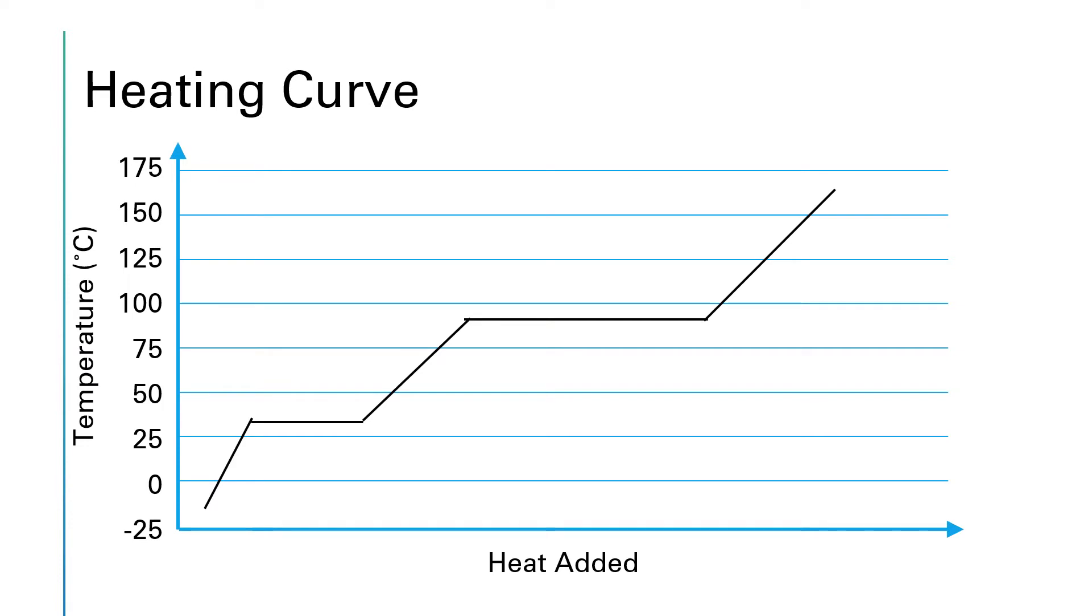This is an example of a heating curve. Typically what you have on the vertical axis of the curve is the temperature in degrees Celsius. On the horizontal axis you'll have something along the lines of heat added. Usually this curve or this axis is labeled kind of vaguely like this.